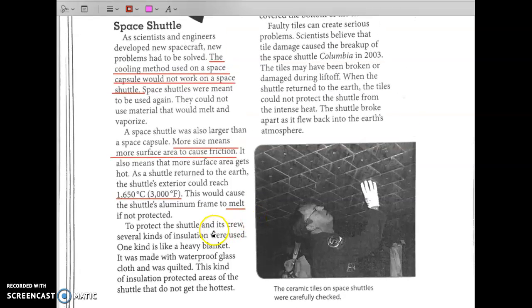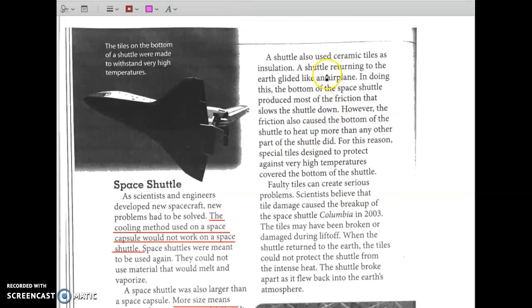To protect shuttle and its crew, several kinds of insulation were used. One kind is like a heavy blanket. It was made with waterproof glass cloth and was quilted. This kind of insulation protected areas of the shuttle that do not get the hottest. A shuttle also used ceramic tiles as insulation.